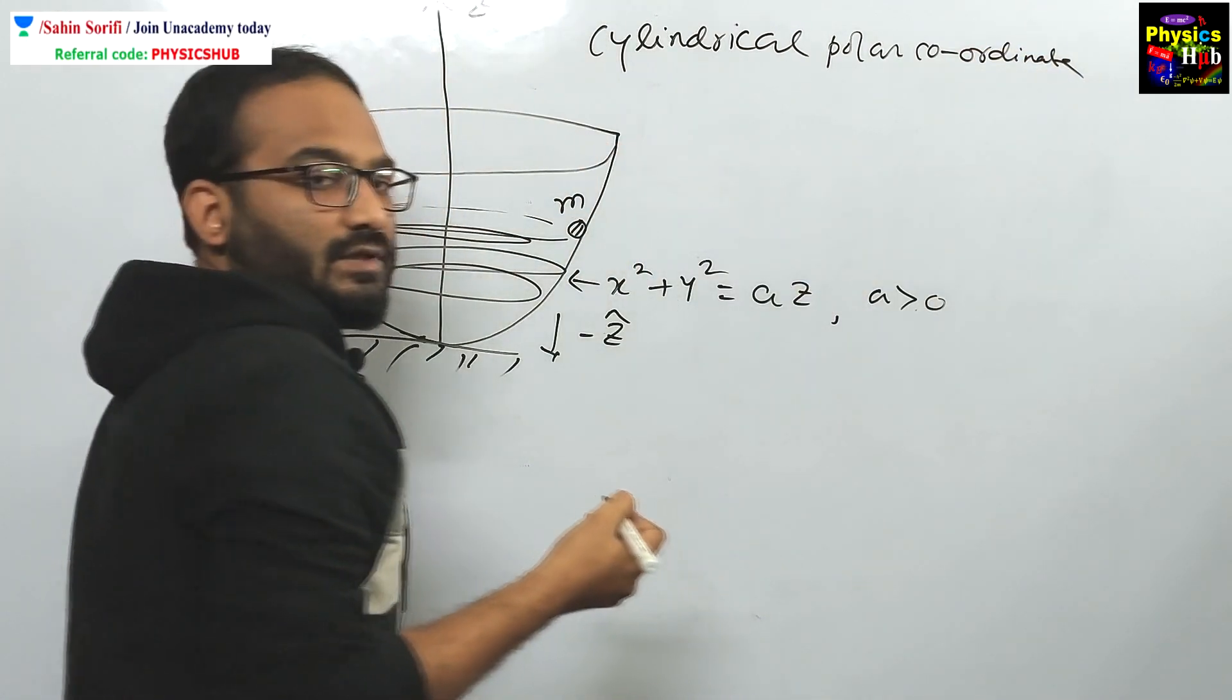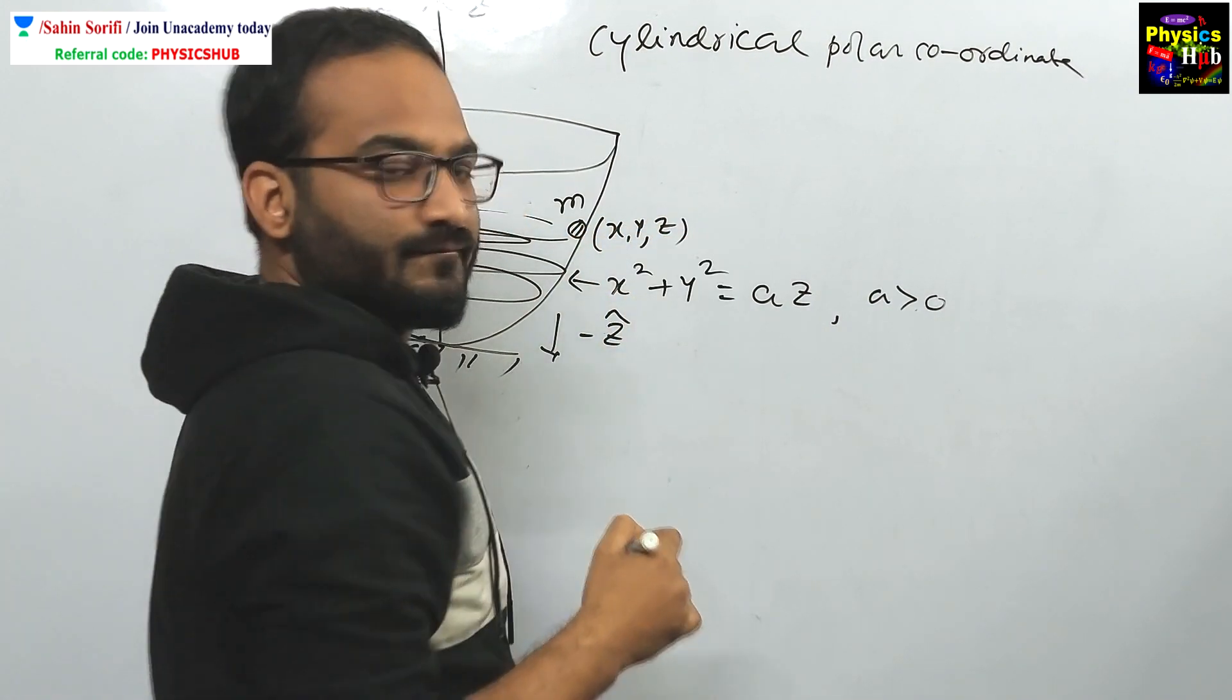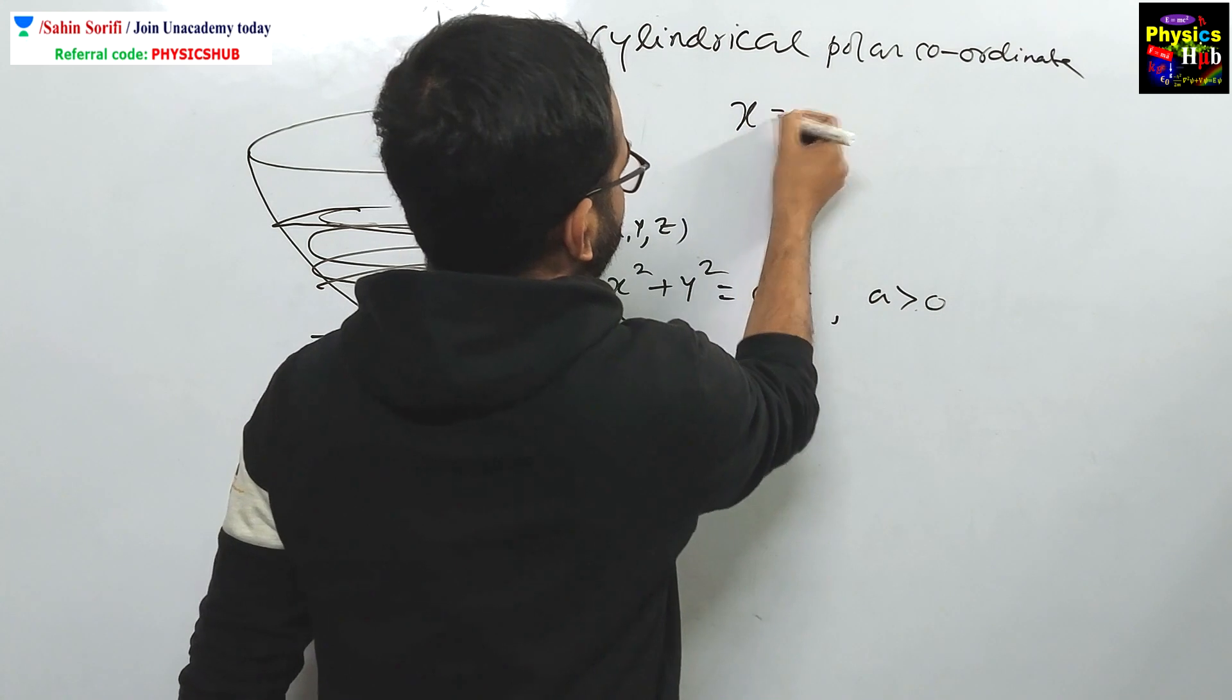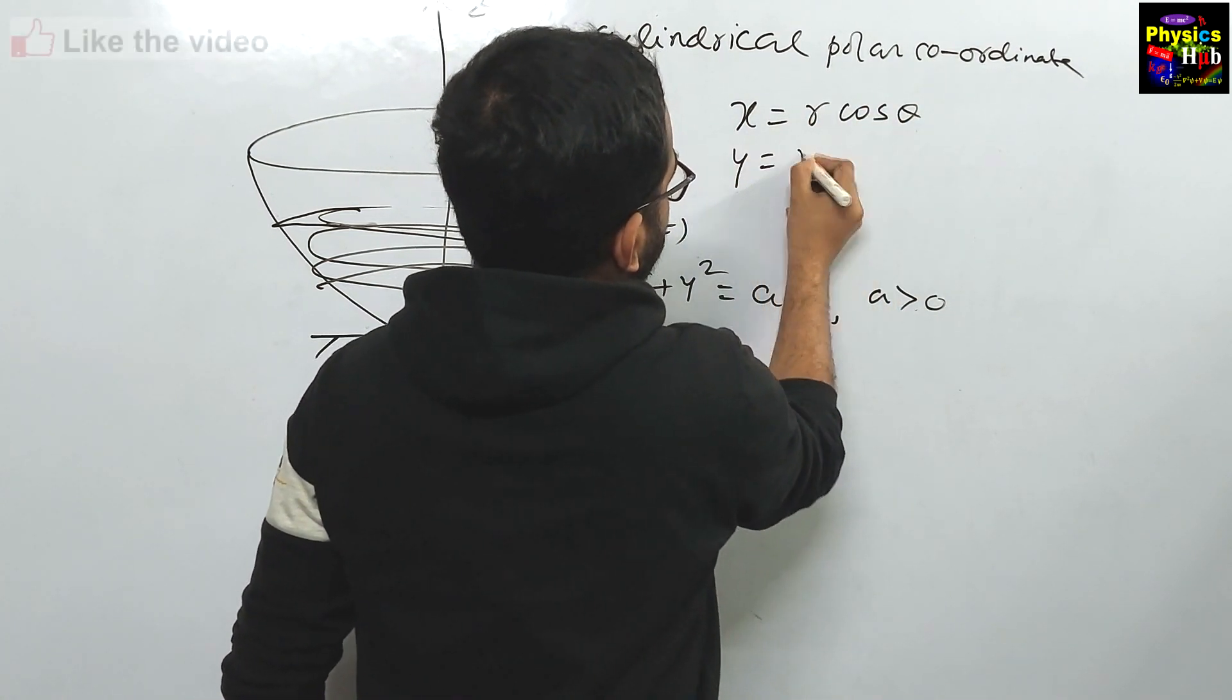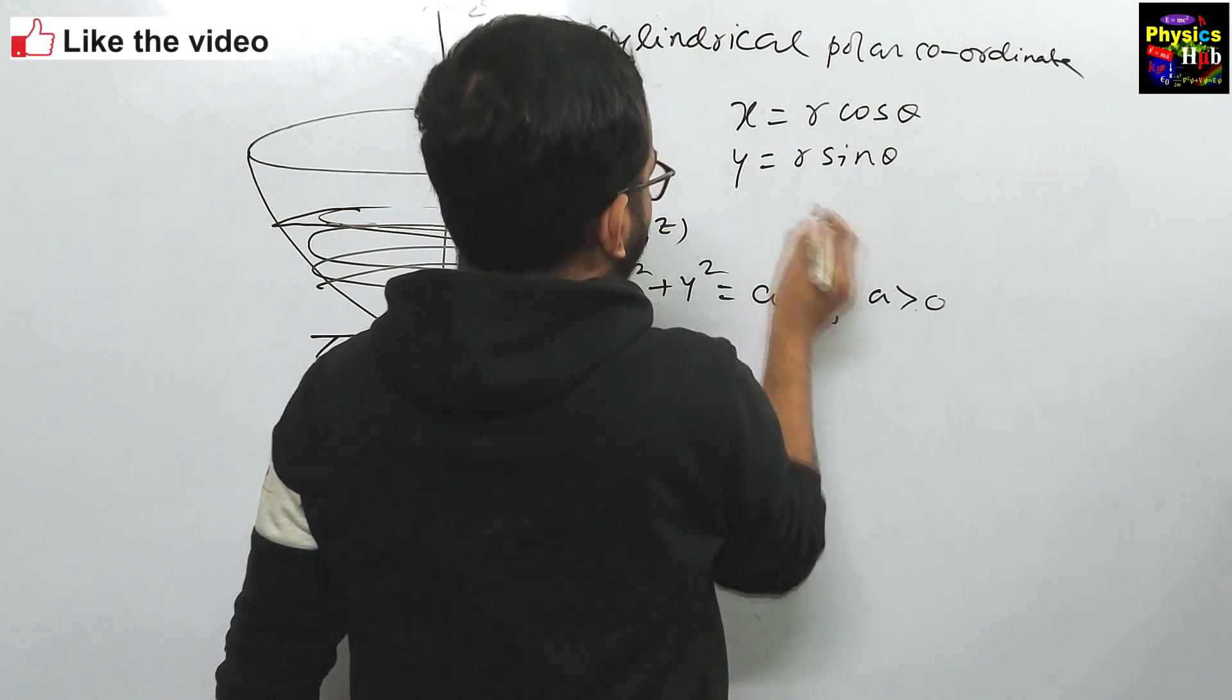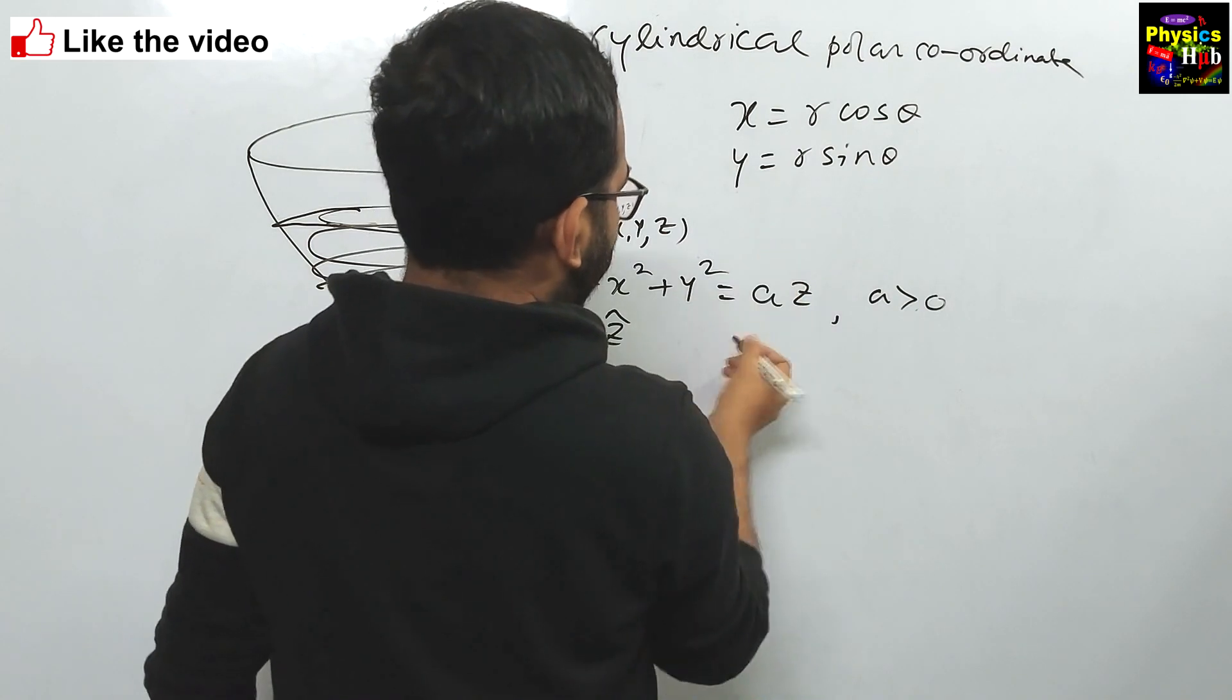As per the cylindrical polar coordinate, let us say the position of this particle is x, y, z. In cylindrical polar coordinate, we have x equals to r cos theta, y equals to r sin theta, and z is fortunately given in the question. We will not take z equals to z.